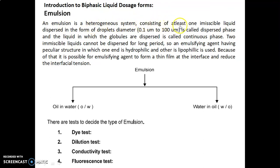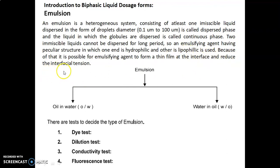Emulsion consists of at least one immiscible liquid dispersed in the form of droplets with diameter 0.1 micrometer to 200 micrometers, called the dispersed phase. The liquid in which the globules are dispersed is called the continuous phase. Two immiscible liquids cannot be dispersed for a long period, so an emulsifying agent — having one hydrophilic end and one lipophilic end — is used to form a thin film at the interface and reduce interfacial tension.